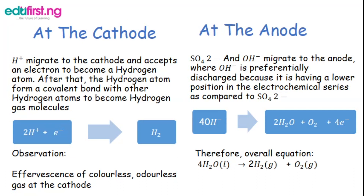At the cathode, hydrogen ions migrate and accept an electron to become hydrogen atoms. These hydrogen atoms then form a covalent bond with other hydrogen atoms to become hydrogen gas molecules. So two hydrogen ions gain electrons to become hydrogen gas (H₂). That is the equation for the cathode reaction.